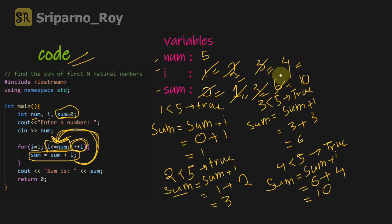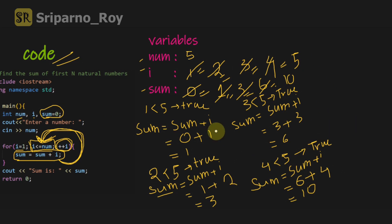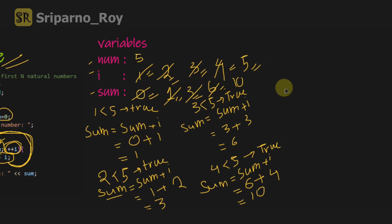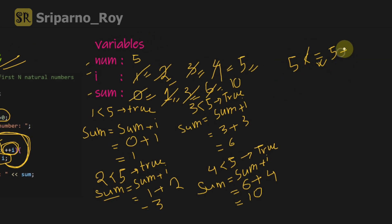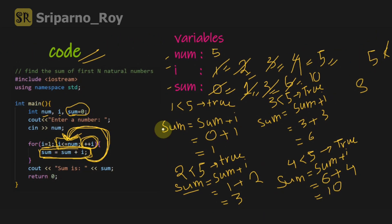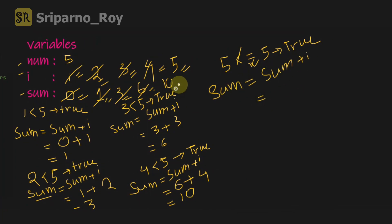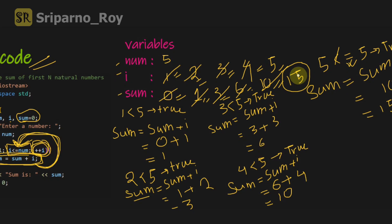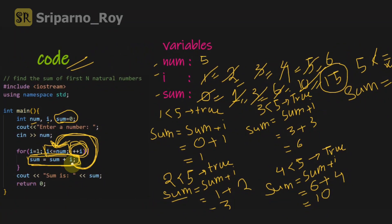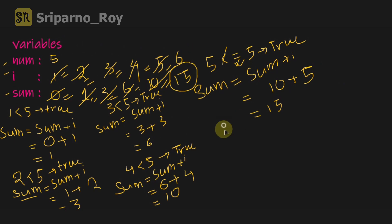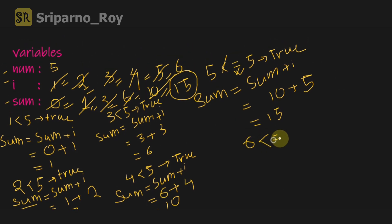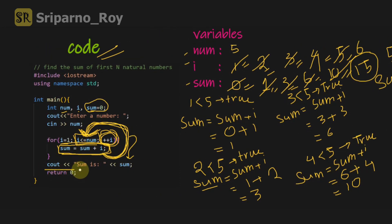Increasing i by 1 makes it 5. The condition i less than or equals to 5 is checked — this time i is not less than but equals to 5 — so it executes sum equals to sum plus i: 10 plus 5 equals 15, and increases i to 6. Now i equals 6, which is greater than num equals 5, so the condition becomes false and it exits the loop and prints the value of sum.